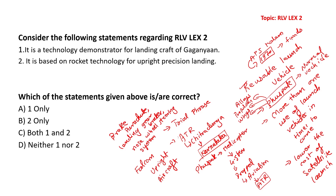Now let us look into the question: Consider the following statements regarding RLV-LEX2. Statement 1 — It is a technology demonstrator for a landing craft of Gaganyaan. It will not be used in Gaganyaan. Statement 2 — It is based on rocket technology for upright precision landing. Upright precision landing is in the Falcon rocket of SpaceX, not in Pushpak. So both statements are not correct and our answer will be D, neither 1 nor 2.